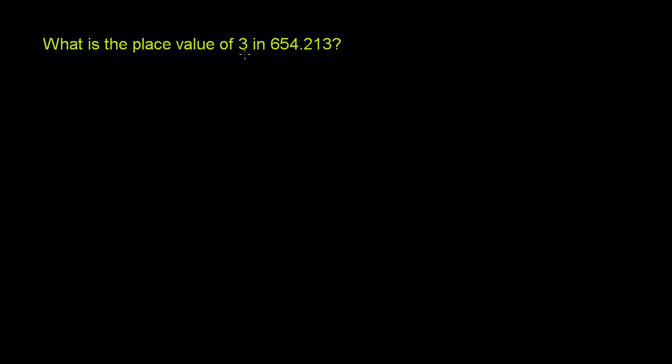What is the place value of 3 in 654.213? So let's think about that. To do that, let me rewrite the number, and I'll write each digit in a different color. So we have 654 point, we get the decimal point, 2, 1, 3.